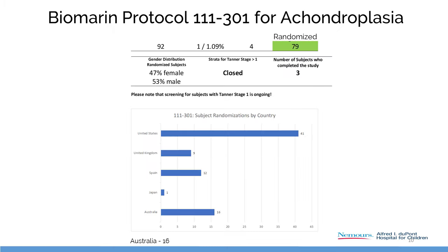The current trial has 79 randomized participants and will recruit 110 around the world — 41 in the US, along with the United Kingdom, Spain, and Australia. This trial will be closing soon.